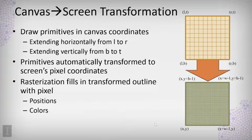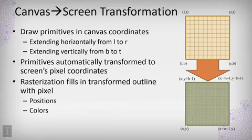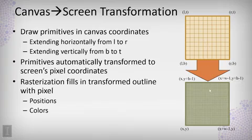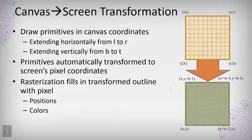There is a canvas-to-screen transformation that happens automatically. We define our coordinate system going from some left-bottom point to some right-top point, plot using those coordinates, and those coordinates are converted to the corresponding pixel locations on the display screen. Those pixel locations are defined starting at (x, y) and going to the point (x + width - 1, y + height - 1). You can define the canvas coordinates to be anything and position them anywhere on the screen, so your 2D graphics can be automatically resized and repositioned just by controlling this canvas-to-screen transformation.